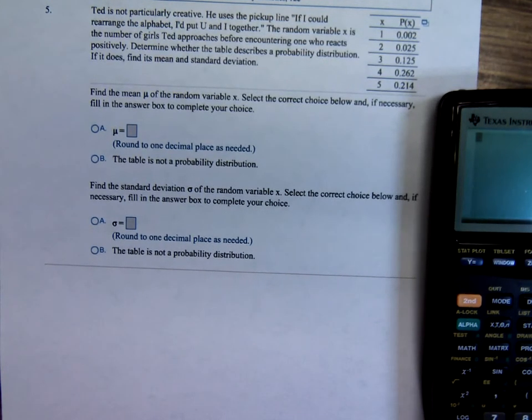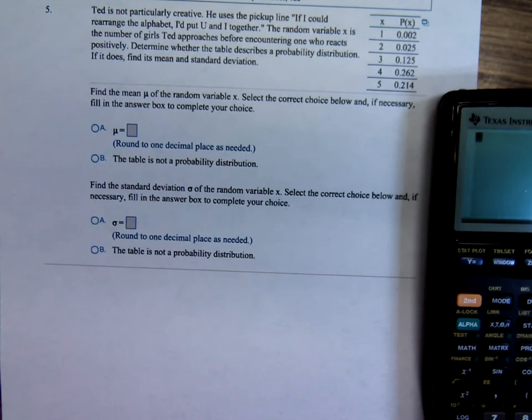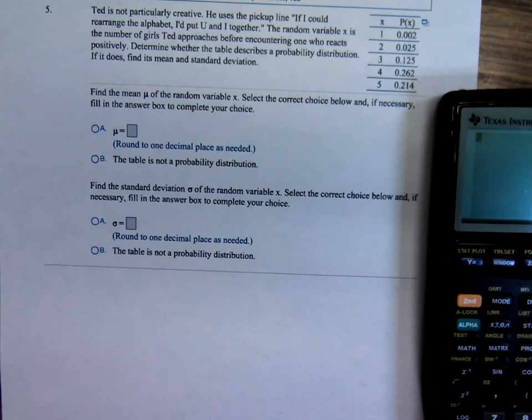This is Anthony Priscilla doing some more probability and statistics with my class. Ted is not particularly creative. He uses the pickup line, if I could have rearranged the letters, I'd put you and I together. The random variable is the number of girls Ted approaches before encountering one who reacts positively. Determine whether the table describes a probability distribution. If it does, find its mean and standard deviation.